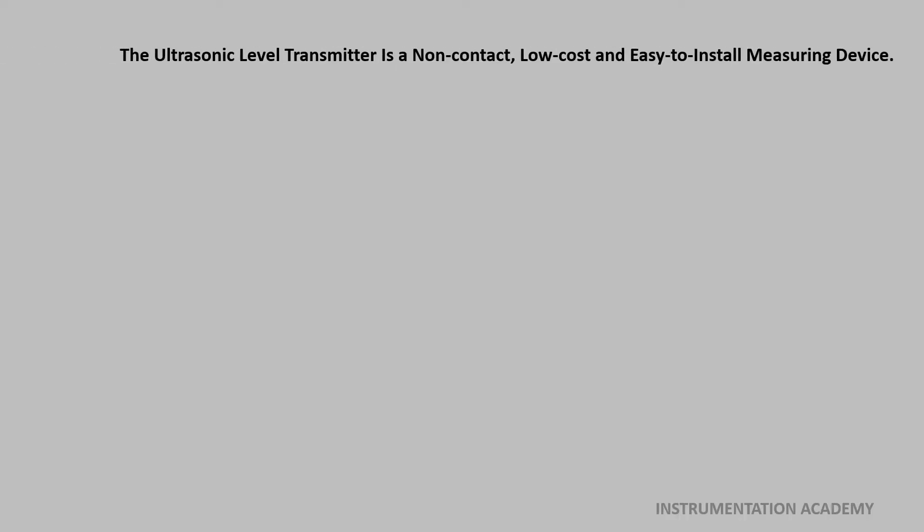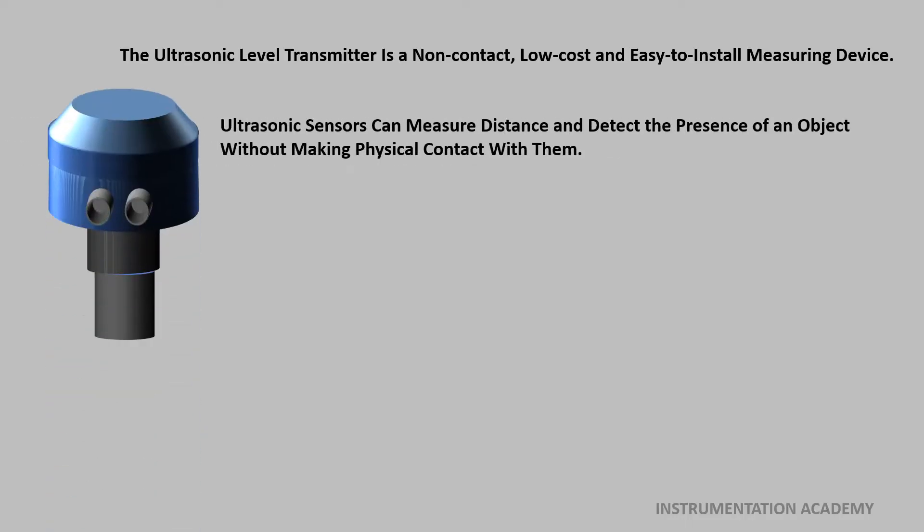Ultrasonic level transmitter is a non-contact, low-cost and easy-to-install measuring device. It can measure distance and detect the presence of an object without making physical contact with them.